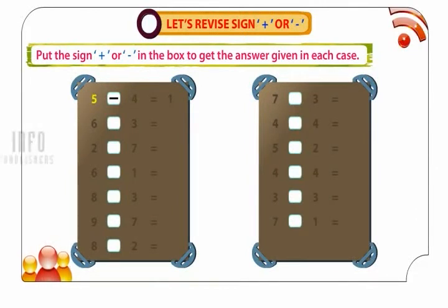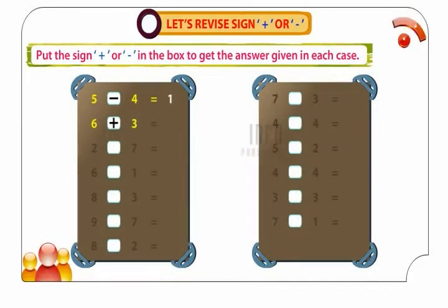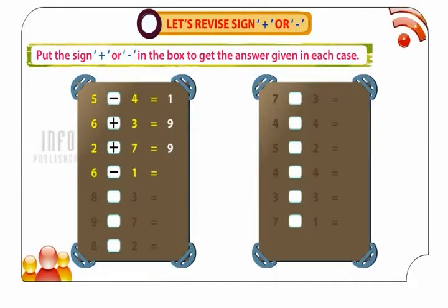5 minus 4 is equal to 1. 6 plus 3 is equal to 9. 2 plus 7 is equal to 9. 6 minus 1 is equal to 5.